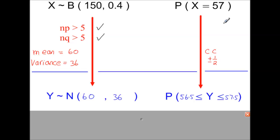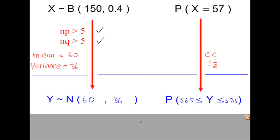A continuity correction is applied — subtracting a half and adding a half. To work out the probability of X being between two values, we calculate separately the probability of X less than or equal to 56.5 and the probability of X less than or equal to 57.5. The continuity correction is applied because the binomial is discrete and the normal is continuous.